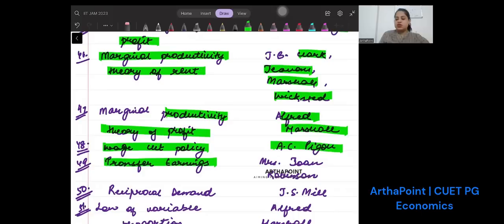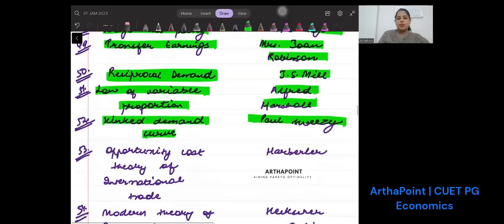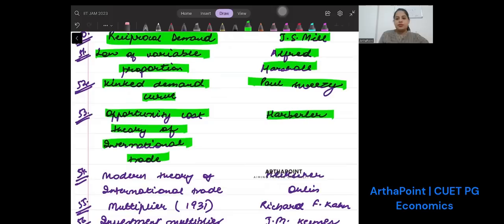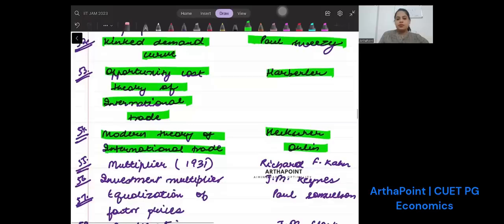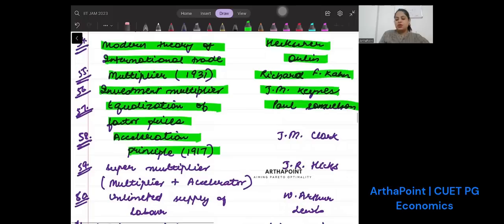Marginal productivity theory of wages was given by Marshall. Wage cut policy was given by A.C. Pigou. Transfer earnings was suggested by Mrs. Joan Robinson. Theory of reciprocal demand was given by J.S. Mill. Law of variable proportions was given by Alfred Marshall. Kinked demand curve was given by Paul Sweezy. Opportunity cost theory of international trade was given by Haberler. Modern theory of international trade was given by Heckscher-Ohlin. Multiplier was given by Richard F. Kahn. Investment multiplier was given by Keynes. Equalization of factor prices was given by Paul Samuelson. Acceleration principle was given by J.M. Clark.